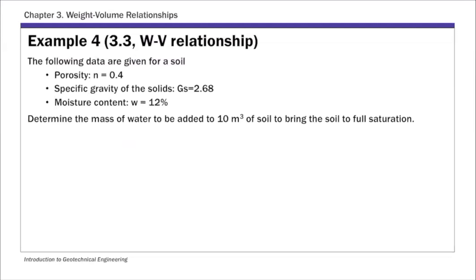This is example four. We are given the following data for moist soil: porosity, specific gravity, and moisture content. Since the soil is moist, we want to calculate how much water is needed to bring it to full saturation.